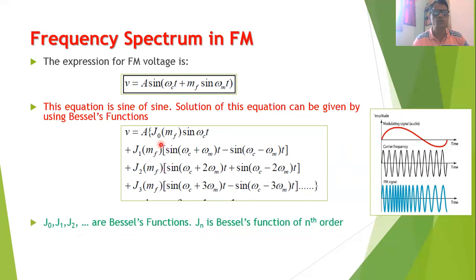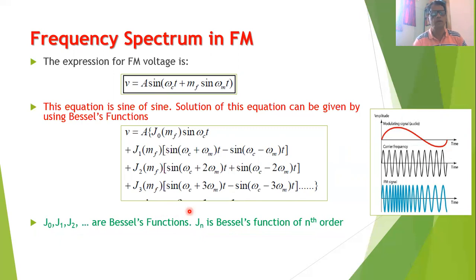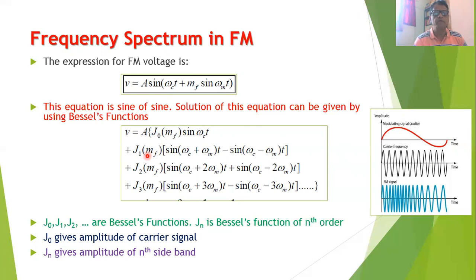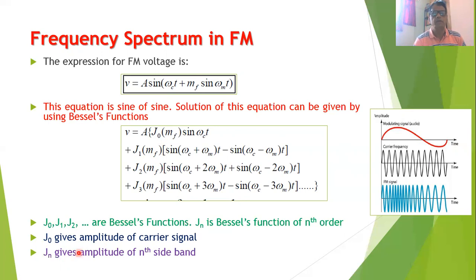In this equation we use terms J0, J1, J2, J3, J4, and so on — these are all Bessel functions. We say Jn is the Bessel function of nth order. J0 gives the amplitude of the carrier signal, J1 gives the amplitude of the first upper and lower sideband, J2 gives the amplitude of the second upper and lower sideband, and in general Jn gives the amplitude of the nth sideband.